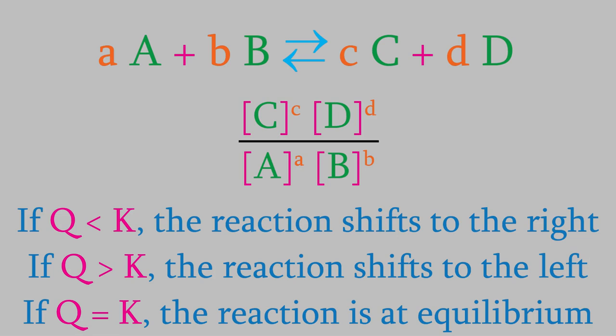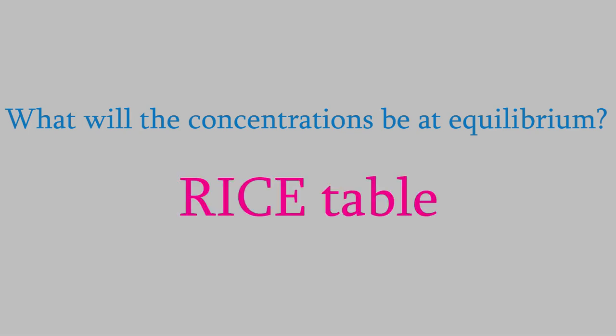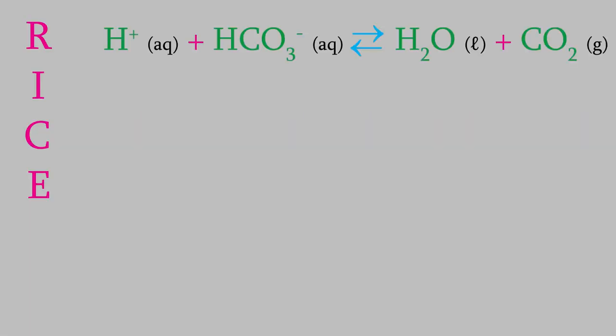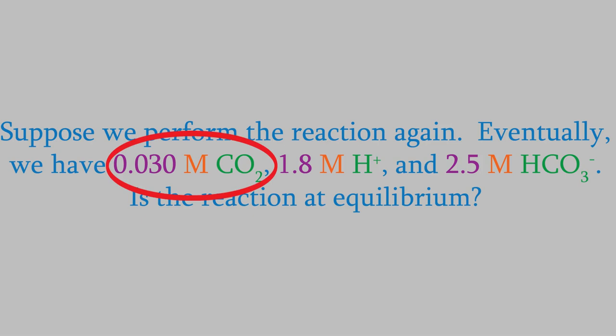Let's see what else we can learn from the previous problem. We saw that Q was lower than K, and that means the reaction is not at equilibrium yet. What will the concentrations be at equilibrium? We actually already know everything we need to know in order to answer that question — the main thing we need to do is set up a rice table. We'll have four rows: the top one will have the balanced reaction, and in the second row we'll have the initial concentrations. We see that there was 1.8 molar H+, 2.5 molar bicarbonate, and 0.030 molar CO2. We don't have a concentration for the water — water doesn't get used in the equilibrium expression because it's a pure liquid.